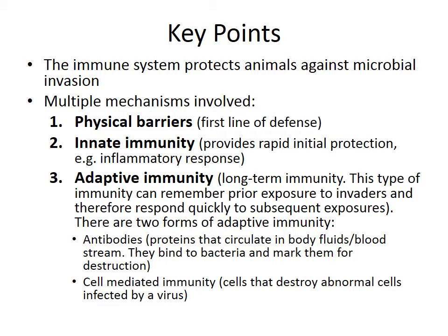The three mechanisms are: physical barriers, which are our first line of defense against invading microbes; innate immunity, which is a rapid initial protection against invaders — the most significant example being the inflammatory response. For instance, if you're bitten by a mosquito, that spot turns red and might swell up — that's an inflammatory response caused by the innate immune system.